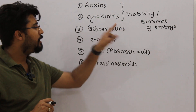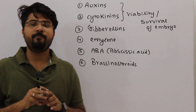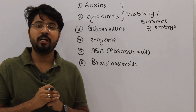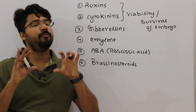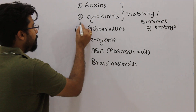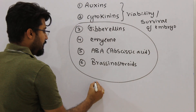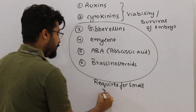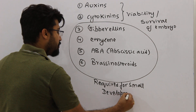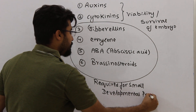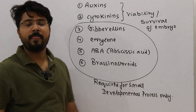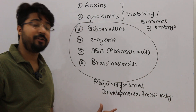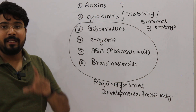This is what distinguishes auxins and cytokinins from the rest of the PGRs. The remaining hormones are required by the plant system for small developmental processes only. Even if their biosynthesis or signaling is blocked, only certain responses will be stopped, but that will not hamper the survival or viability of the embryo. So the rest of the PGRs are required for small developmental processes only.